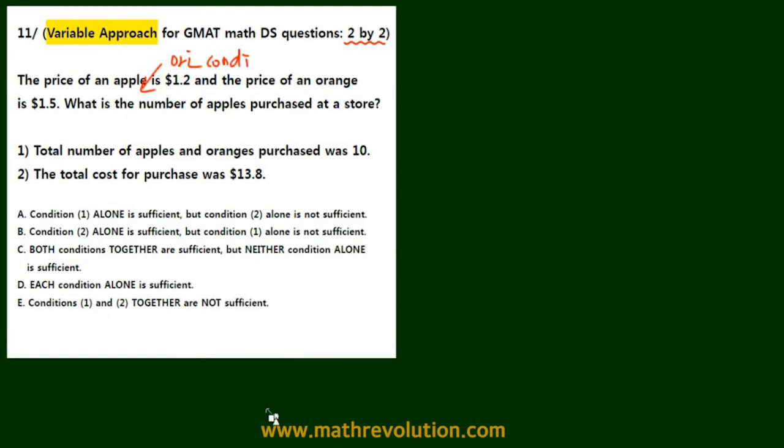Now with the variable approach method, first what we do is modify the original condition. What we've done here is represent it using a 2 by 2 table like this.